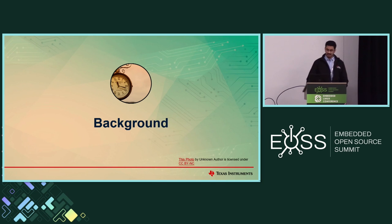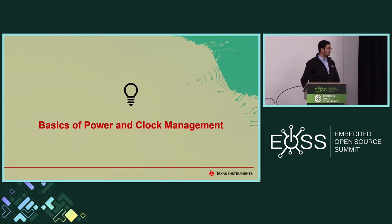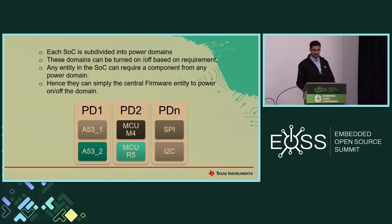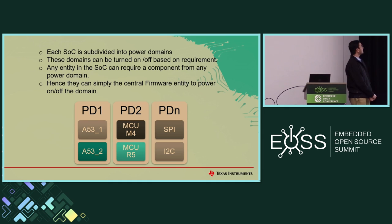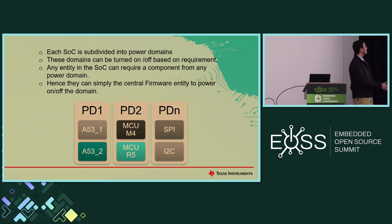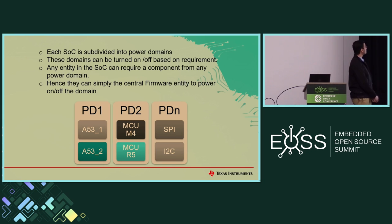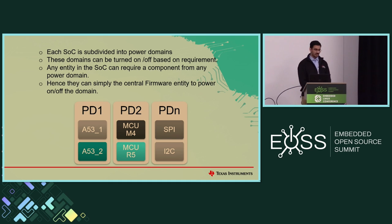Let's cover the basics of what power and clock management is. Each SOC today has gotten incredibly complex and has been split into multiple power domains to offer more granularity. These domains can be individually turned on or off based on requirement. Any entity in the SOC can request a particular power domain to be turned on or off depending on whether it's going to be using the component from that power domain. You have a central firmware entity which you can use to power on or off the domain.